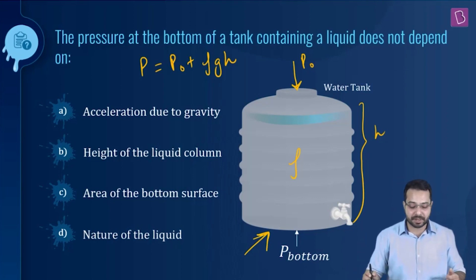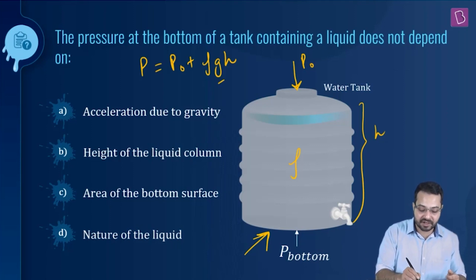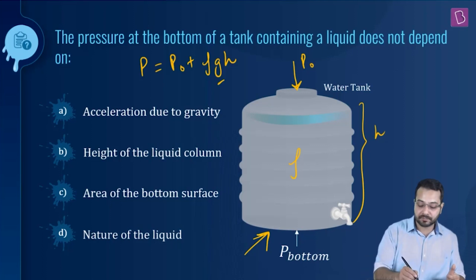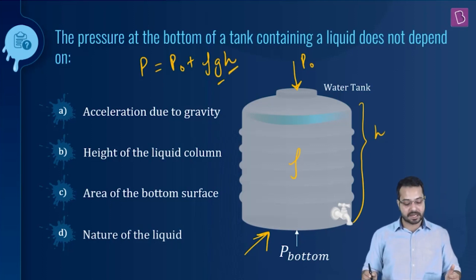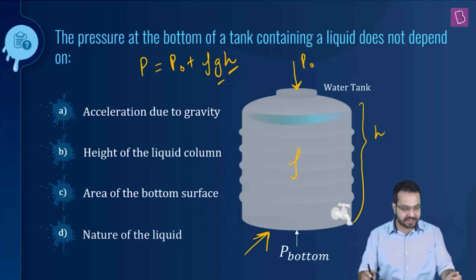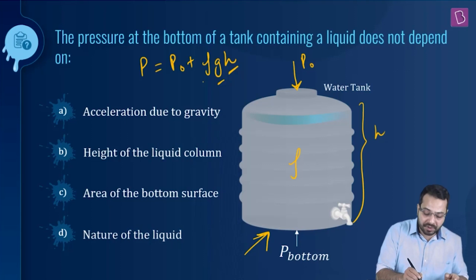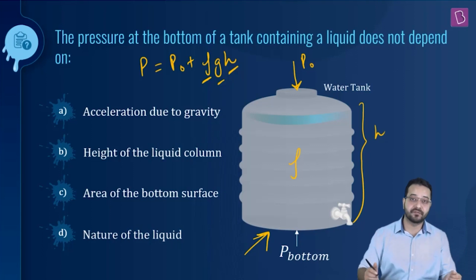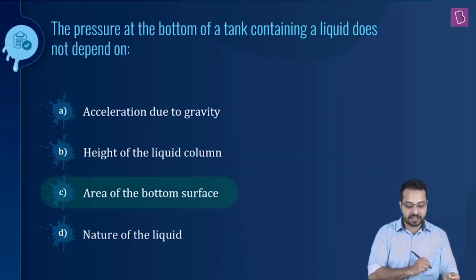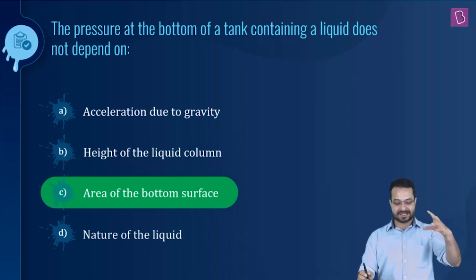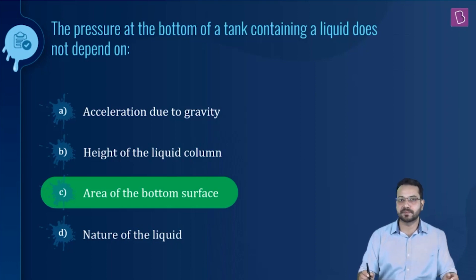Does it depend on acceleration due to gravity? Of course — g appears in the equation. Does it depend on the height of the liquid column? Of course — h is there. Does it depend on the area of the bottom surface? There is no area term in the equation. The nature of the liquid matters because density depends on it. So the correct option is: area of the bottom surface — the pressure does not depend on it.